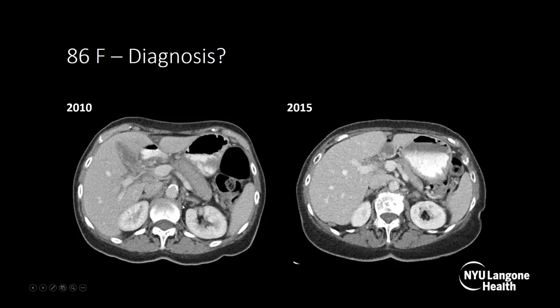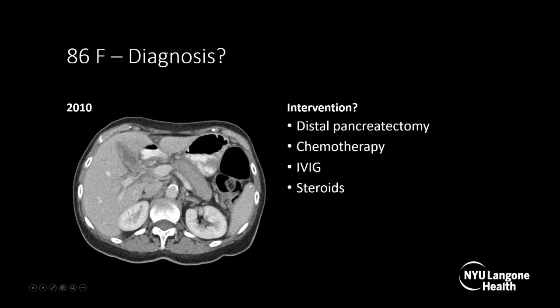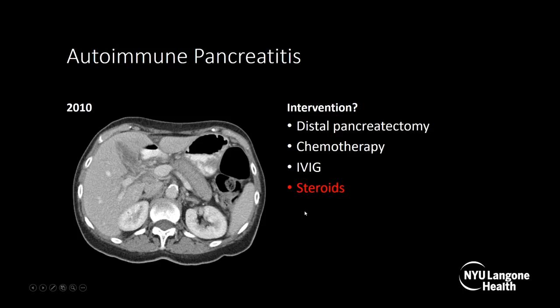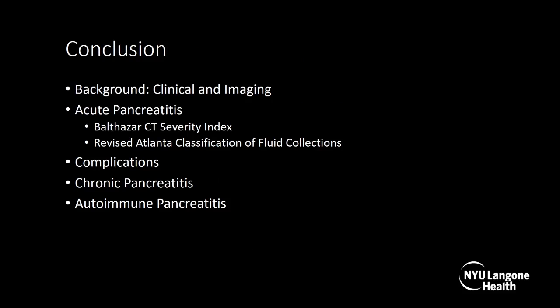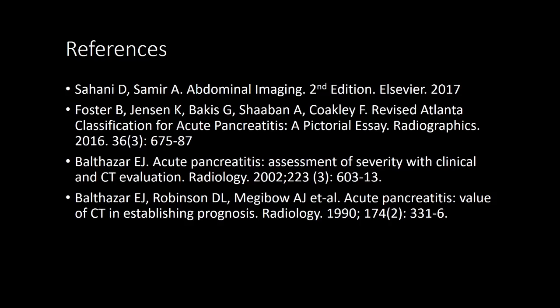This is an 86-year-old female with CTs from 2010 and 2015. In 2010, the pancreas is enlarged with a halo around it. In 2015, the pancreas is normal-sized without the halo. In this case of autoimmune pancreatitis, the patient received steroids, and that's the reason for the improvement. To conclude, we talked about background information, imaging findings of acute pancreatitis — specifically the Balthasar CT severity index and revised Atlanta classification of fluid collections — complications, chronic pancreatitis, and autoimmune pancreatitis. Thank you.